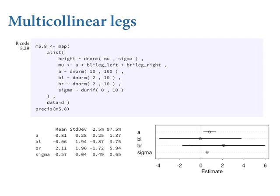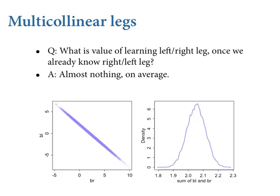We need to look at the posterior more closely. The model is asking: what is the value of learning the left or right leg once we already know the other? The answer is pretty much nothing. But there are really big standard deviations. In the lower left plot, I'm showing around 10,000 samples from the posterior distribution of the two coefficients — left leg on the vertical, right leg on the horizontal. They're really strongly negatively correlated — a long ridge of equally plausible combinations.